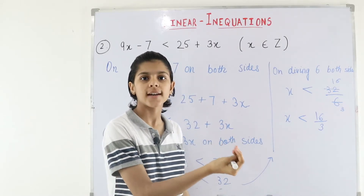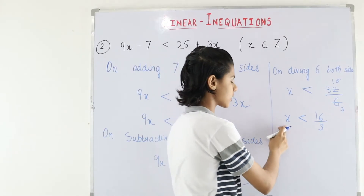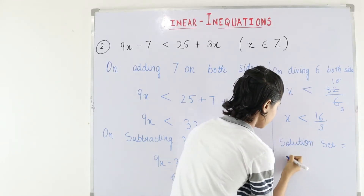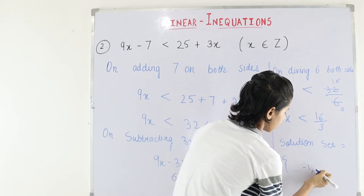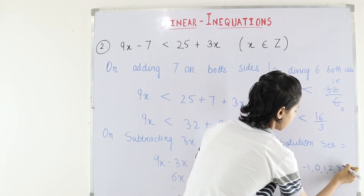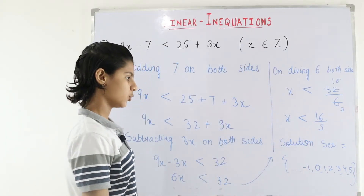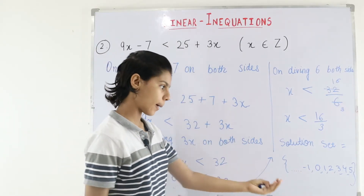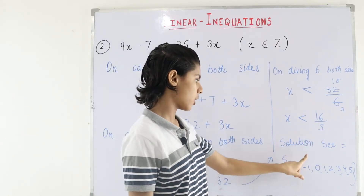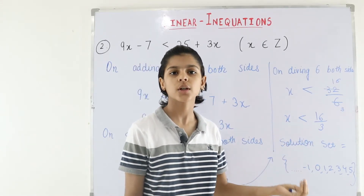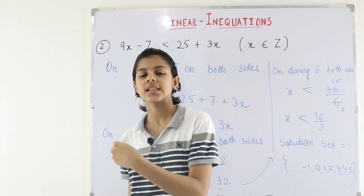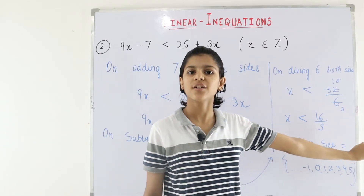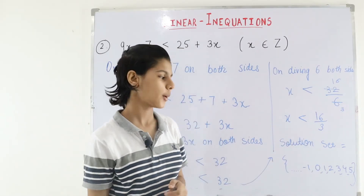So x is less than 5.3, meaning all integers less than 5.3. The solution set is: {..., -1, 0, 1, 2, 3, 4, 5}. The negative integers continue to infinity because there is no fixed lower bound. 5 is included because it is less than 5.3, but 6 would not be. So this is the solution set.